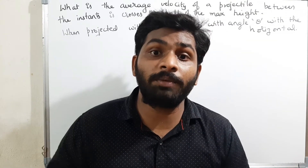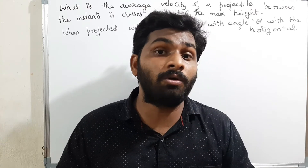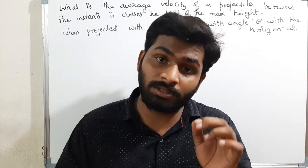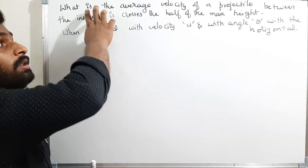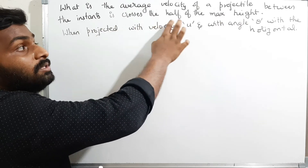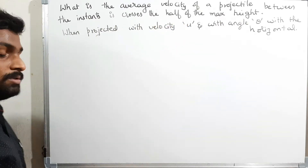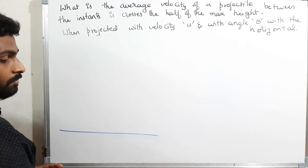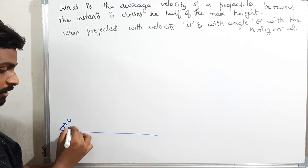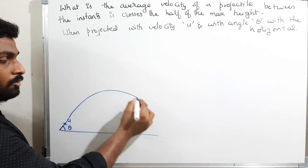Hi students, welcome to my channel Doctor's Physics. This is the 25th video on the Doubt Clarification section. Today's question is asked by a student named Hemant. His doubt is: what is the average velocity of a projectile between the instances of crossing half of the maximum height? Here is the ground, and a body is projected with velocity u at some angle theta, following projectile motion.